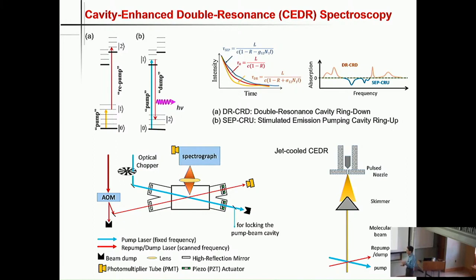By fixing the first laser to a transition and scanning the frequency of the second laser, you can get a spectrum where a positive signal — positive absorption — is double resonance cavity ring-down, and a negative signal is stimulated emission pumping cavity ring-up. This is a simplistic scheme for the experimental setup. We already have an X-shaped dual-wavelength cavity. One cavity will be locked to the laser, which will be locked to the transition frequency, and the second laser is for cavity ring-down or cavity ring-up measurement.